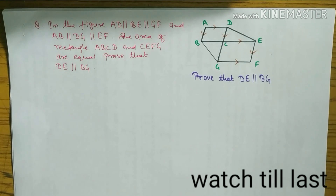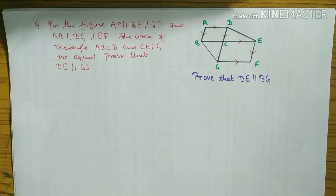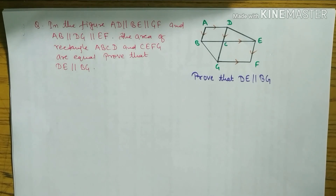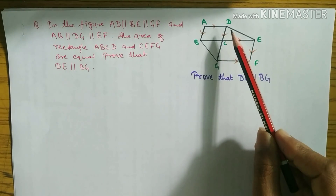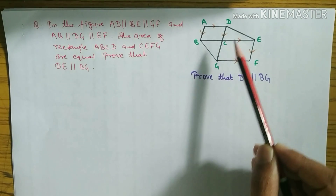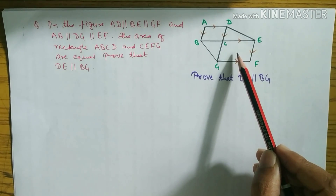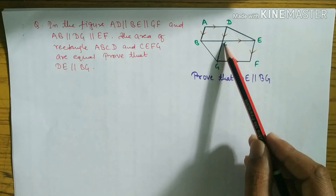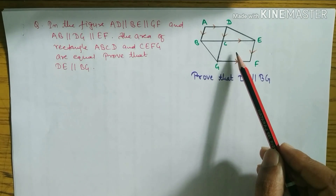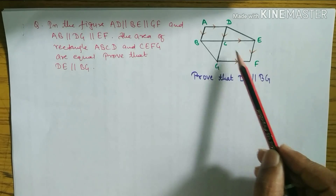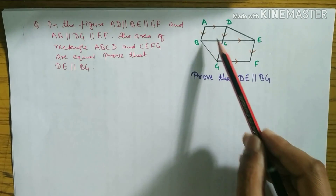Look at the question: In the given figure, AD is parallel to BC is parallel to GF, and AB is parallel to DG is parallel to EF. The area of rectangle ABCD is equal to the area of rectangle CEFG. Prove that DE and BG are parallel. This diagram is a little bit big — the area should be shorter; I mistakenly drew it big, but you can understand by looking at the question bank.